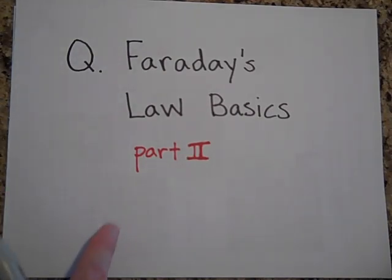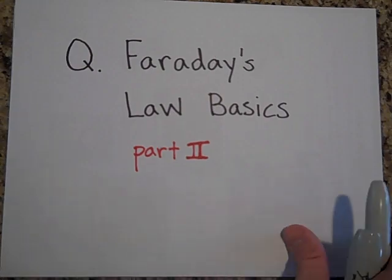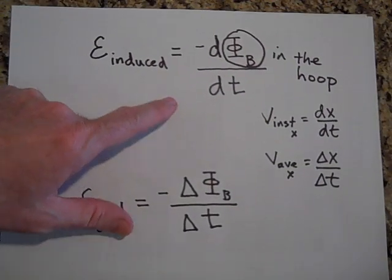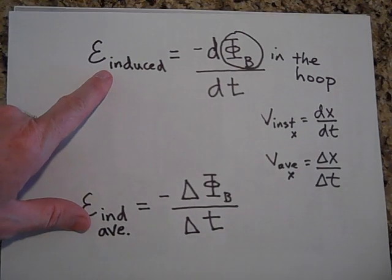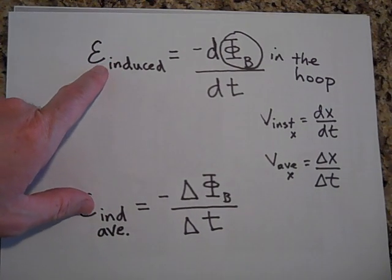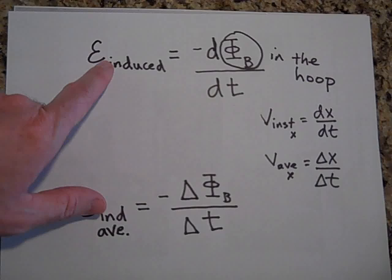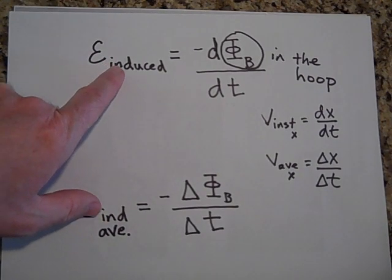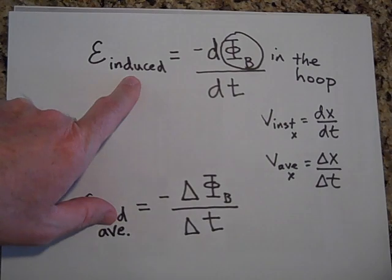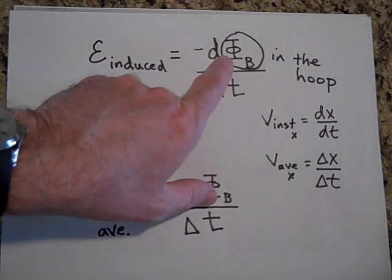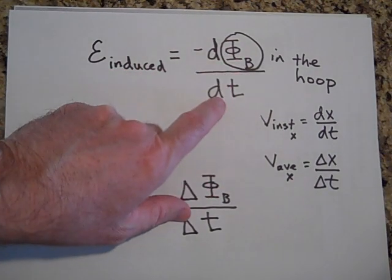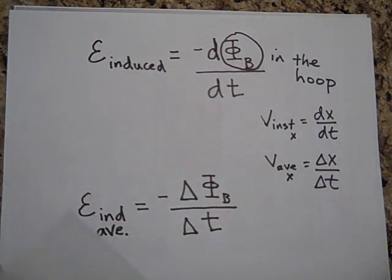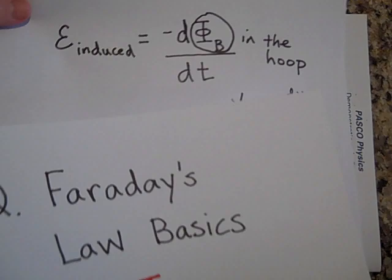I just showed you how to do Faraday's law for average EMF. Now I'd like to show you how you use the top equation. Remember the EMF that's induced in a hoop, the voltage in other words, and by the way, if you know the voltage and you know the resistance, you can get the current. But the EMF that's induced in a hoop is just going to be how fast the flux changes with time, the derivative of phi with respect to time, the negative derivative. So let me show you how that applies.